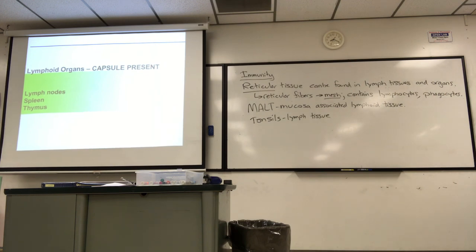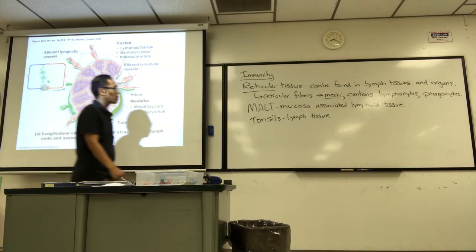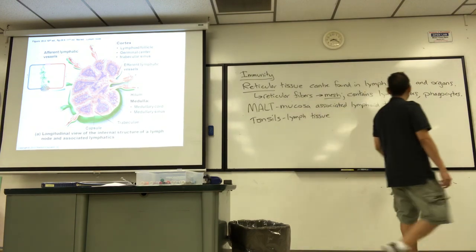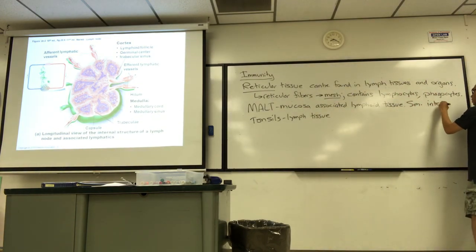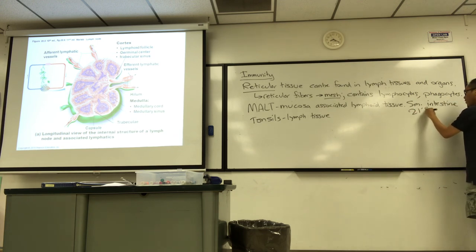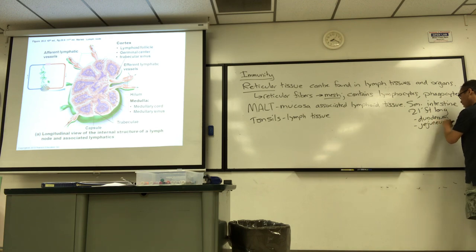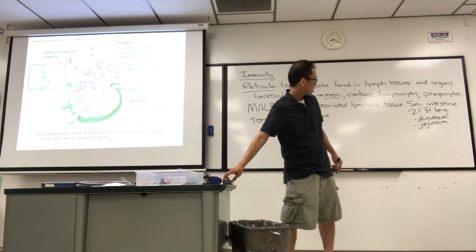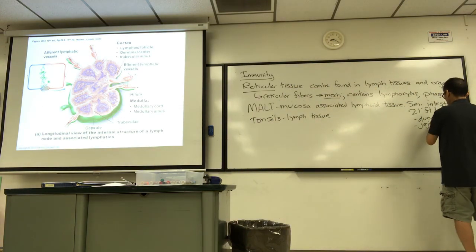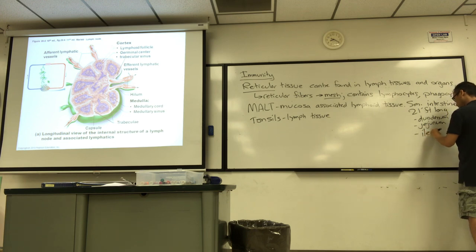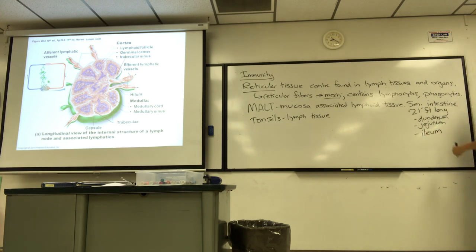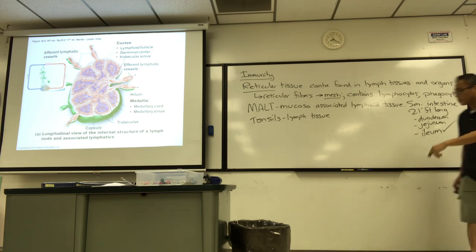The small intestine is about 21 feet long and has three parts: the first 10 inches is the duodenum, then the jejunum, and the distal part is the ileum — that's the last part of the small intestine and where you find the MALT. We'll look at it under the microscope later.